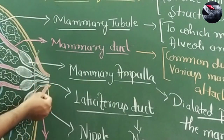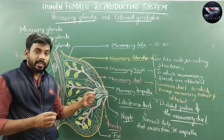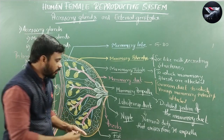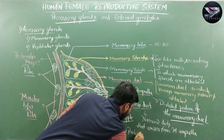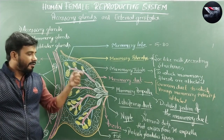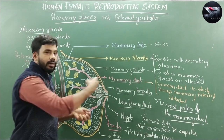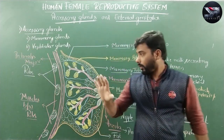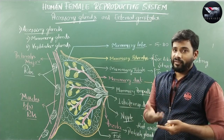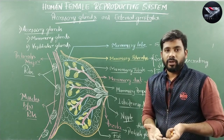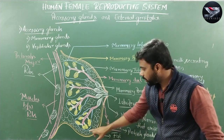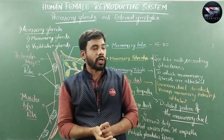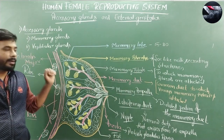The nipple is generally surrounded by a pinkish glandular area where more sebaceous glands are present; this pinkish glandular area around the nipple is called the areola. The sebaceous glands generally provide lubrication for sucking of milk by the baby. The mammary gland also has a variable amount of fat — some individuals have less fat, others more adipose tissue.